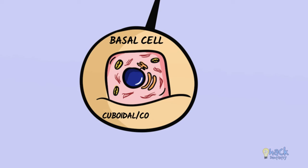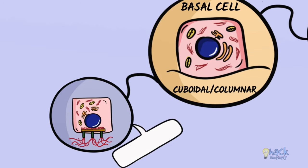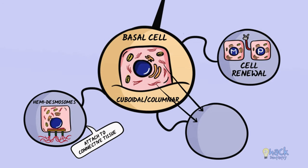The basal layer is the lowest layer consisting of cuboidal or columnar cells just above the basal lamina or basement membrane. It consists of the progenitor and maturing population responsible for continuous renewal of cells in the epithelium. The basal cells are attached to the connective tissue below with hemidesmosomes and ultrastructurally consist of tonofilaments packed into bundles called tonofibrils.